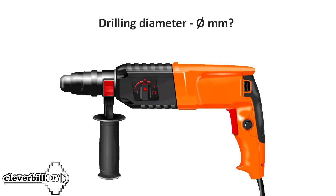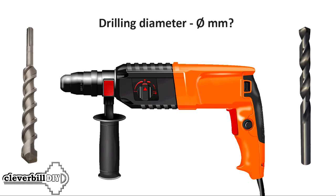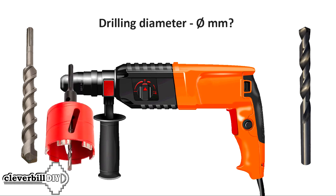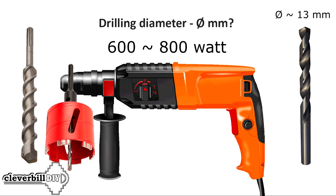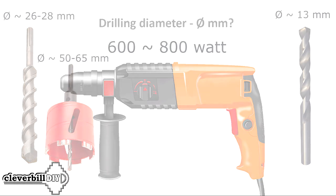Drilling diameter is typically indicated for concrete and metal surfaces. Its value depends on the type of nozzle, which can be a solid drill or a hollow crown. The diameter of the hole made with a crown is approximately three times the size obtained with a drill. In general, holes with a diameter of 4 to 160 millimeters can be made. The most popular hammer drills, with a capacity of 600 to 800 watts, drill holes with a diameter of 13 millimeters in metal, 26 to 28 millimeters with a drill in concrete, and 65 millimeters with a diamond crown in concrete.